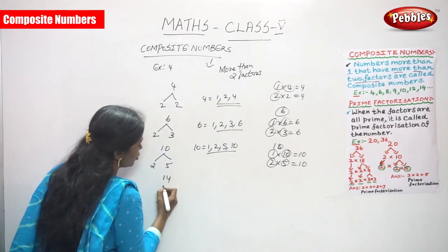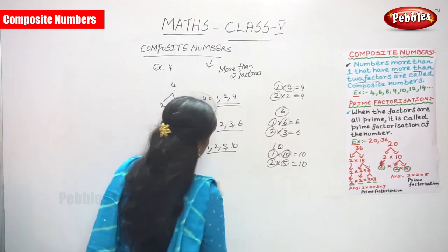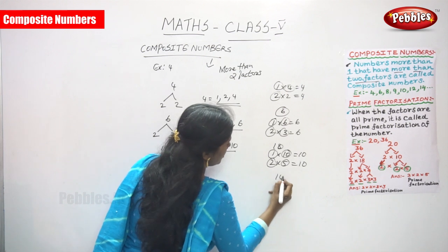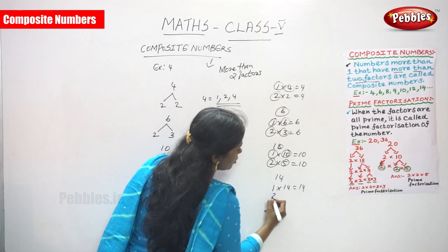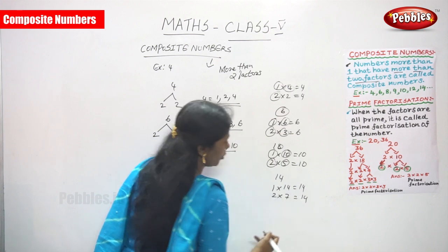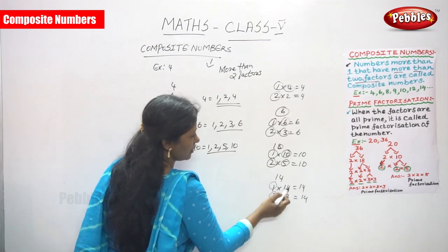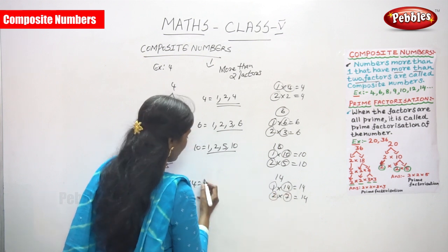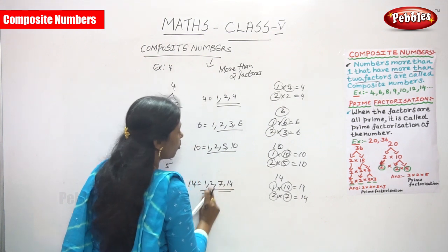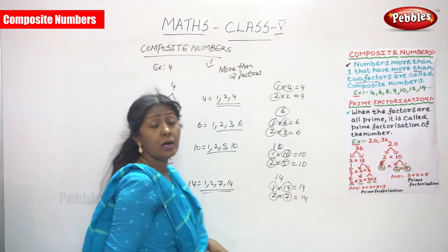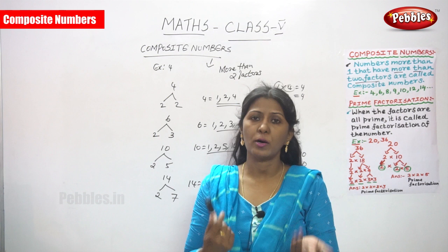Now let's take the last example, 14. Fourteen is two times seven. One into 14 is 14, and two into seven is 14. So the factors of 14 are 1, 2, 7, and 14 — that is more than two factors. So 14 is a composite number. Any number with more than two factors is called a composite number.